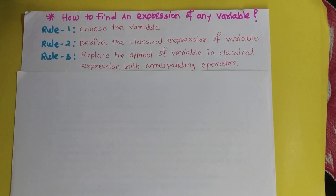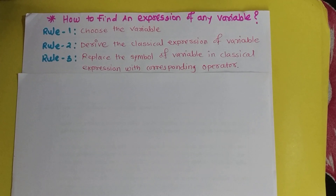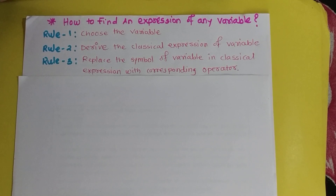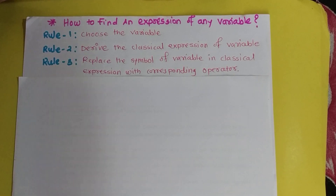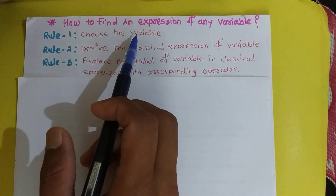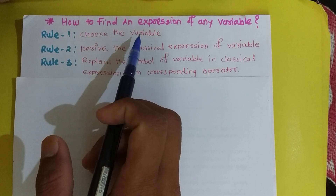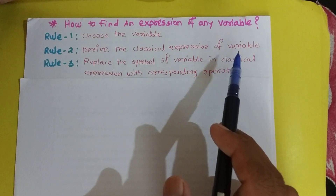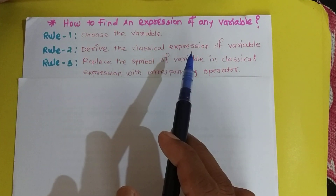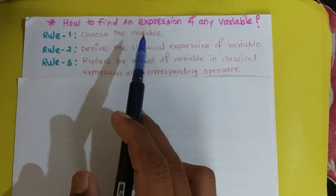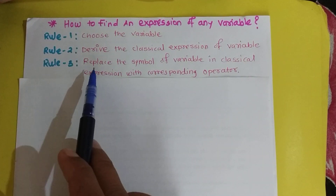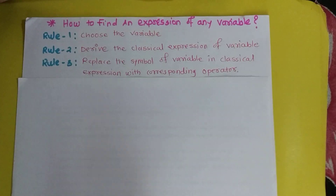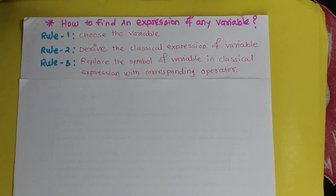The question arises: how to find an expression of any variable in quantum mechanics. To find an expression of any variable in quantum mechanics, you must follow three rules. Rule one: choose the correct variable. Rule two: derive the classical expression of that variable. Rule three: replace the symbol of the variable in the classical expression with its corresponding operator.